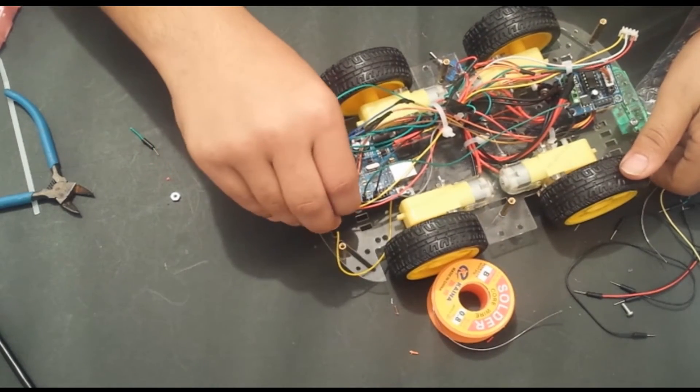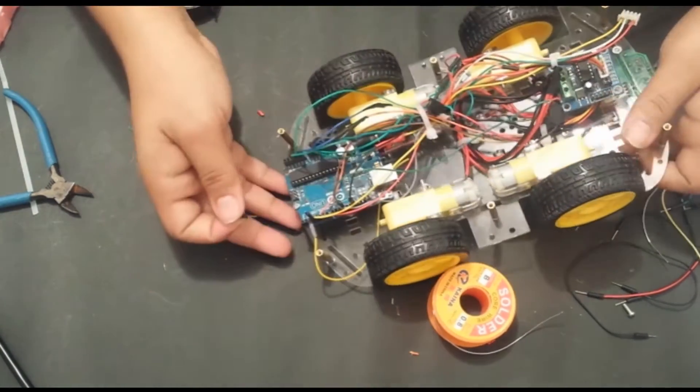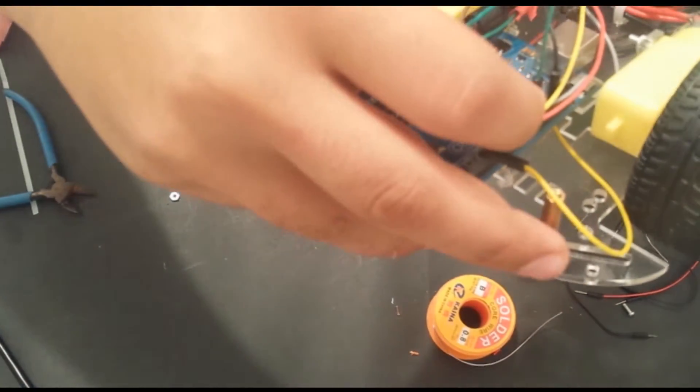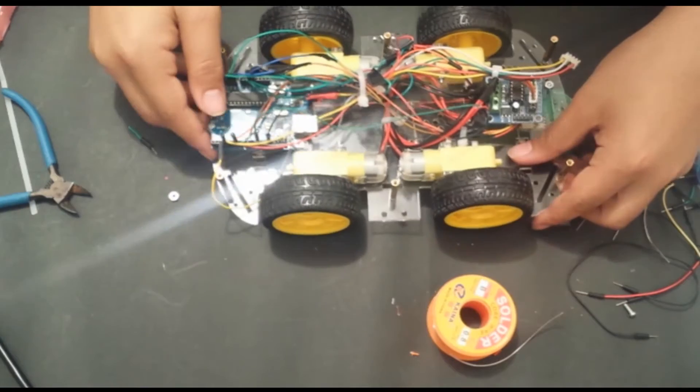I also used the cut-off heads of these jumper cables to secure the wires that were on the Arduino so that they would not come loose over time. And this is basically what I have done.